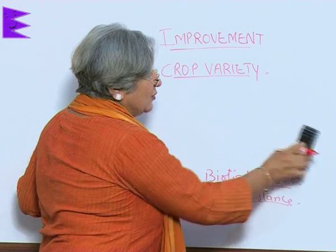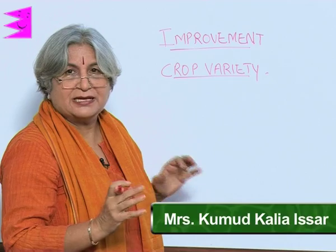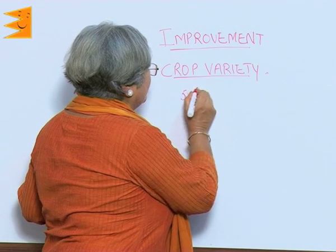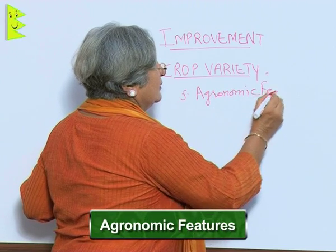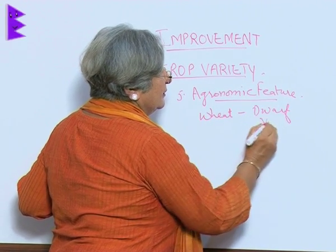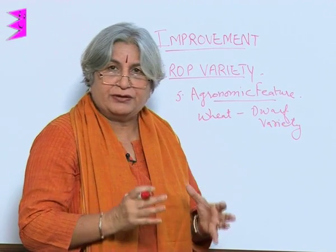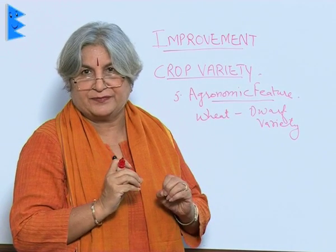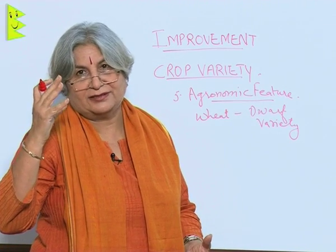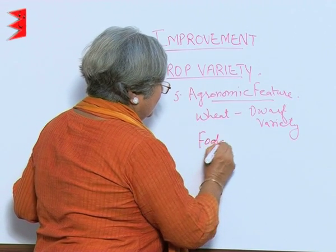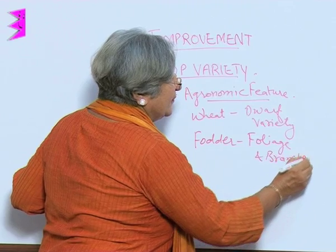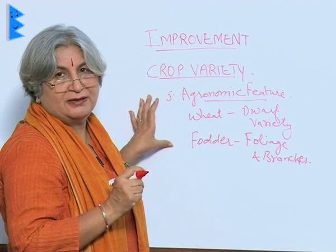In a crop, it is not only the seeds that are important. In some cases, it is the foliage or the branches that are important, especially in the case of fodder. That means we also have to take care of agronomic features. For example, for wheat we need a dwarf variety — a short variety — so that the nutrients are not utilized for gaining height but for producing grains. But in the case of fodder, it is the branches and leaves that are more important, so there we want the length and vegetative growth. Depending upon what we are growing, we will also consider the agronomic feature.